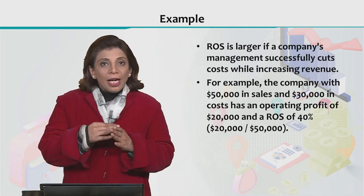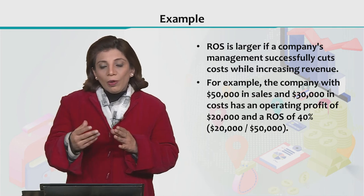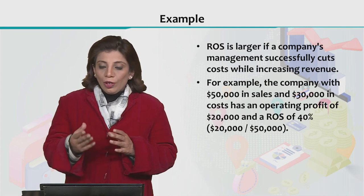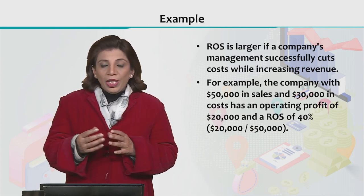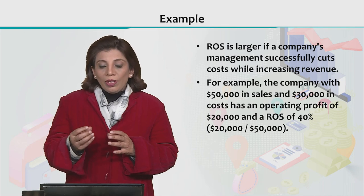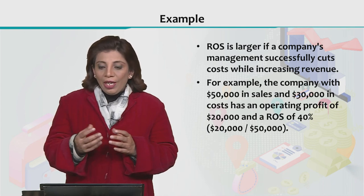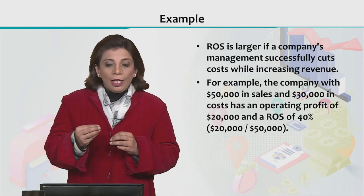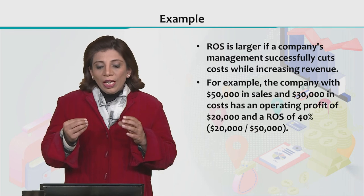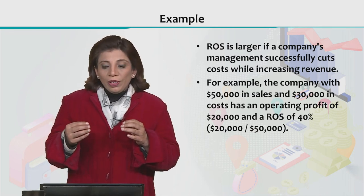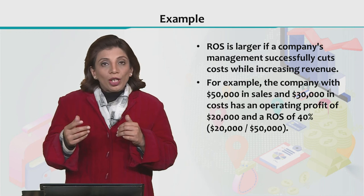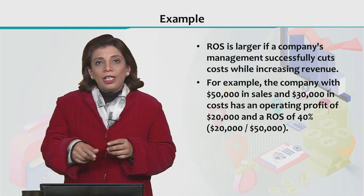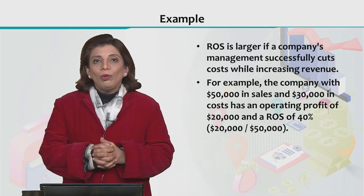Let's take up an example to understand how ROS is calculated and how the value can be interpreted. Assume that a company has earned $50,000 in sales and has incurred $30,000 in costs. We divide the operating profit of $20,000 by $50,000 in net sales, which gives a ratio of 40%. This is how we find the value of Return on Sales — in this example, it turns out to be 40%.